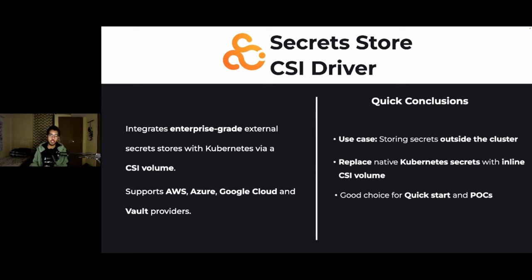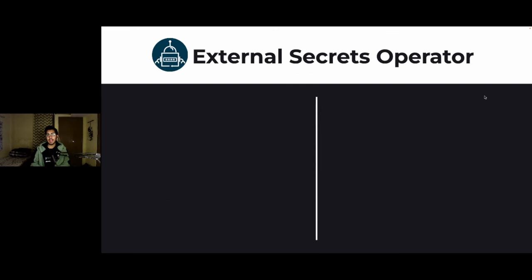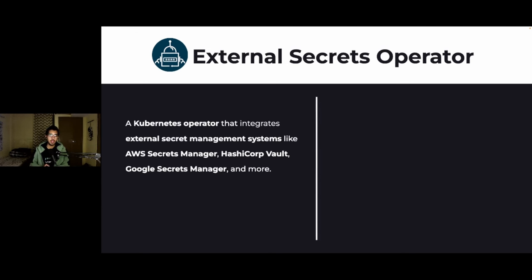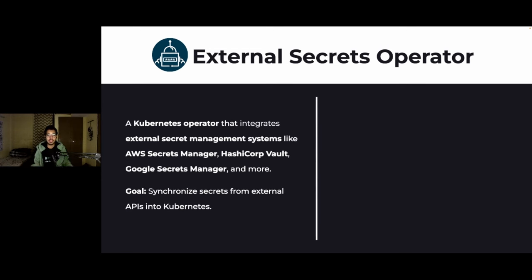The last tool is the external secrets operator, which is currently being heavily used in the ecosystem. It's a Kubernetes operator that integrates with external secret management systems such as AWS Secrets Manager, HashiCorp Vault, Google Secrets Manager, and many more, providing a way to access secrets from those external providers. The goal of this tool is to synchronize secrets from external APIs into Kubernetes — your secrets are stored in external providers and you access them through this operator.